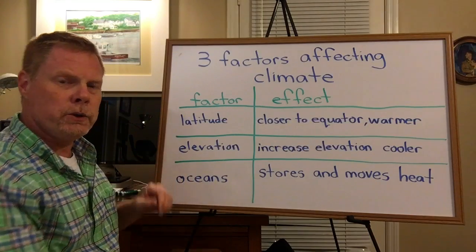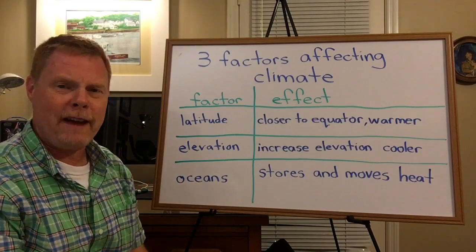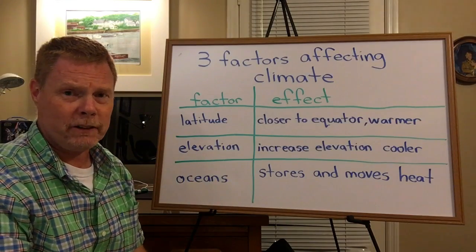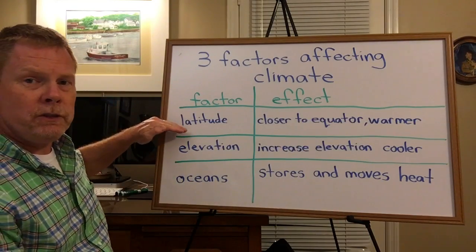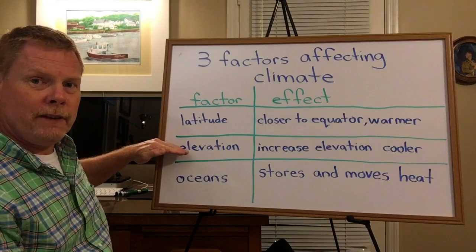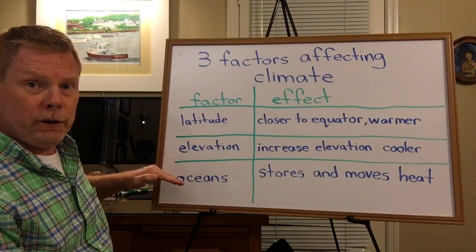So those are the three main factors that affect climate on earth: latitude, elevation, and oceans.